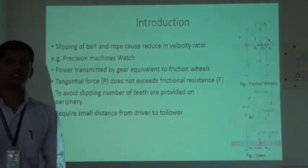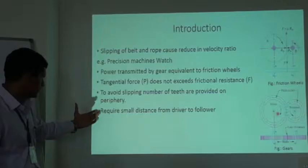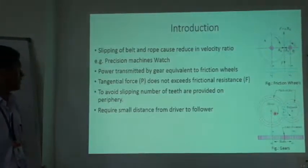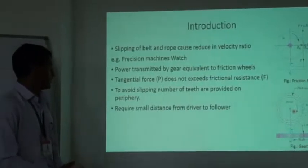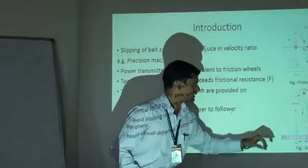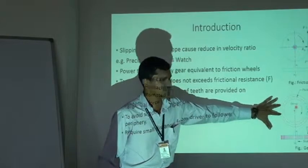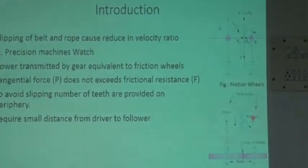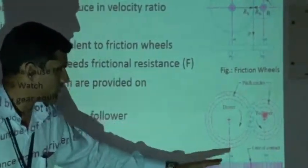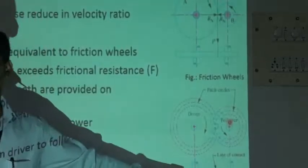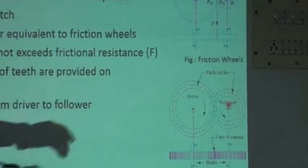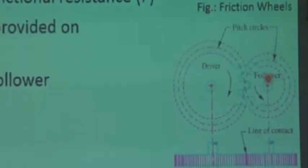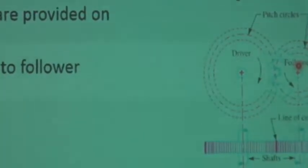What we are doing in the case of gears? We are providing a number of teeth on the periphery of the gear. As you can see in this figure, this is the figure of gears. This big gear is known as the driver gear, and the smaller one is known as the follower, also called the pinion. These two shafts are coplanar and parallel to each other, and can be connected with the help of gears. There are no chances of slipping. All gears are engaged with each other, and we transmit the same power as required.